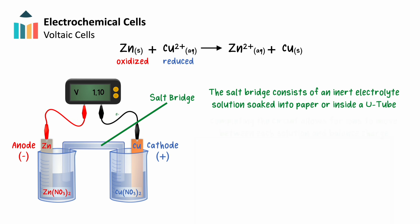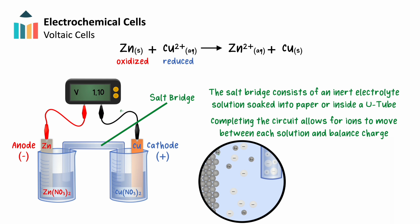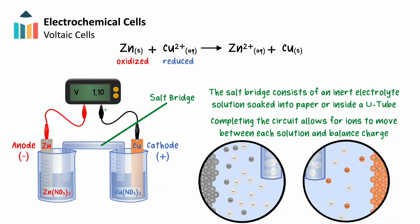In doing so, we allow ions, or charge, to move between our electrolyte solutions without allowing them to mix. As the voltaic cell runs, ions within the salt bridge will move to balance the buildup of positive or negative charge. In this example, negative ions will move to our zinc half-cell, attracted to the addition of positive zinc ions. Positive ions in the salt bridge will move to the copper half-cell, attracted to the negative charge buildup from the loss of copper ions in solution. Each half-cell will be neutralized by this process, and the voltaic cell will be able to run for a longer period of time.